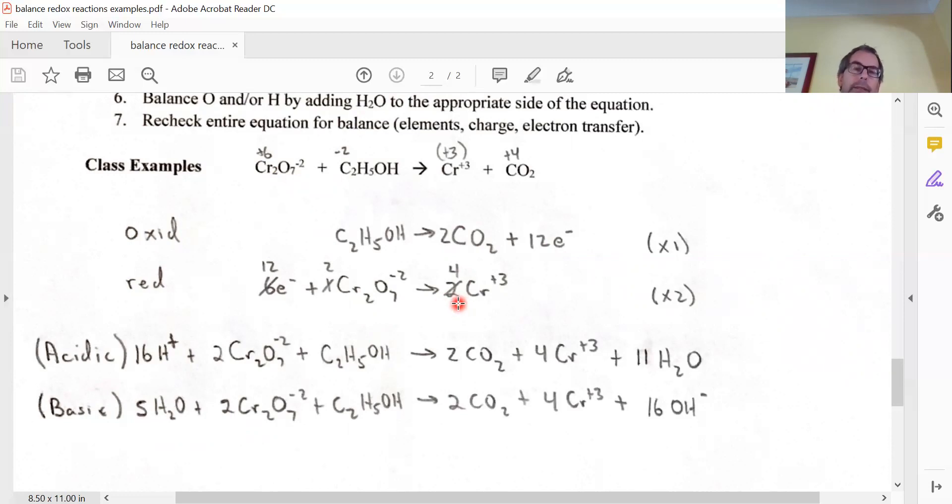Now notice you're going from plus six to plus three, so that's a movement of three electrons, but times two would be six electrons.